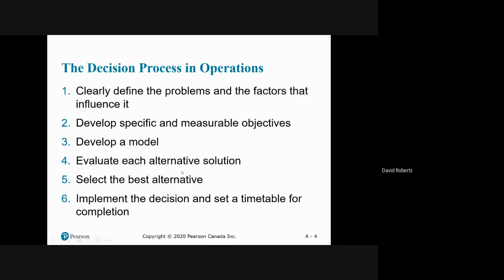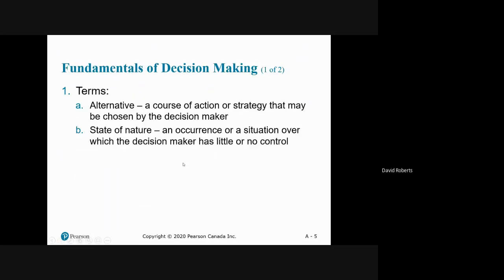Alternative is a course of action or strategy. The state of nature is an occurrence or a situation over which the decision maker has little or no control. For example, one of the examples we're going to do is you're going to have inventory for different size crowds that attend a different event.